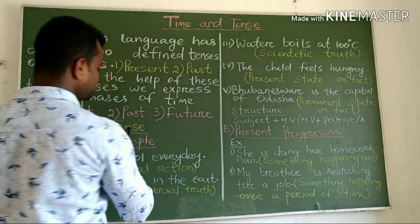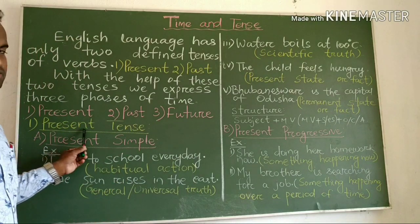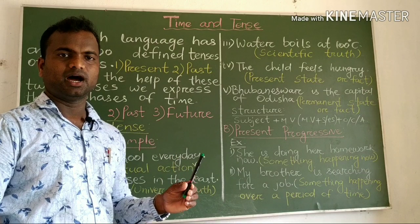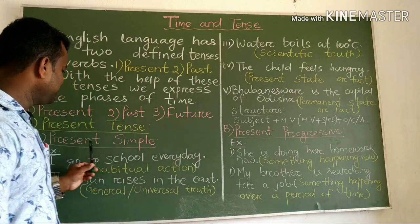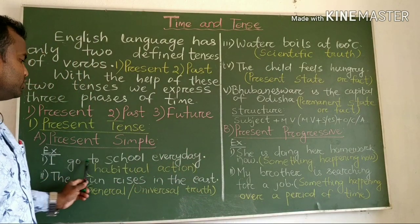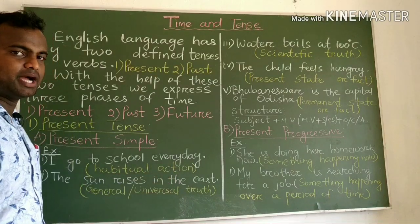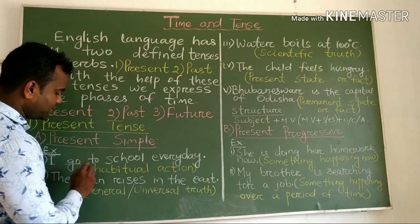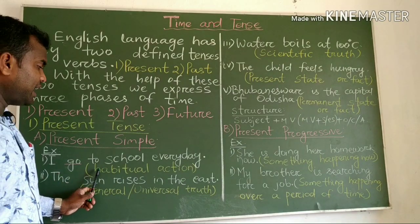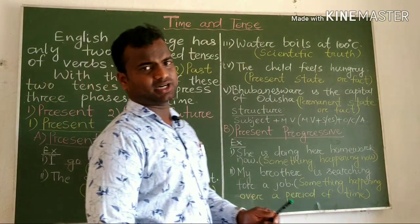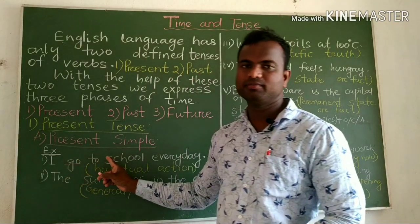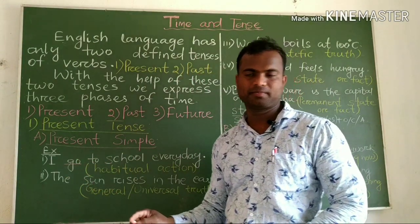The first tense is present tense. Present tense includes present simple, present progressive, present perfect, and present perfect progressive. Example of present simple: I go to school every day. He plays cricket every day.